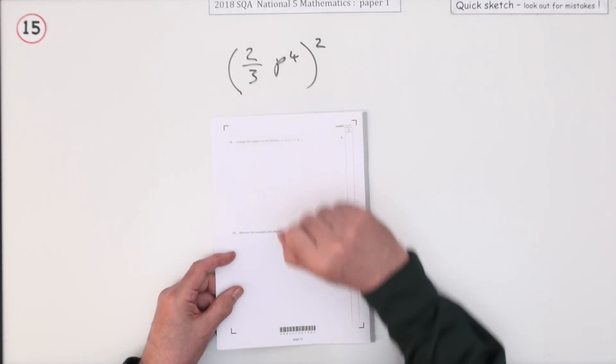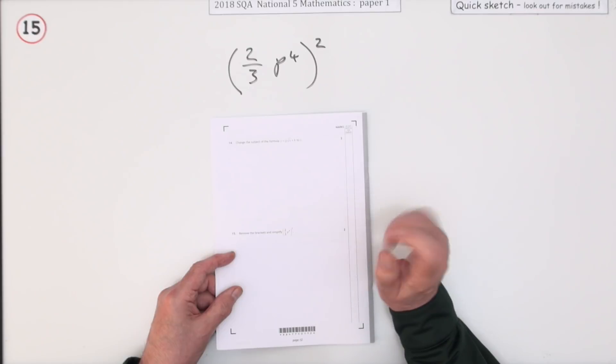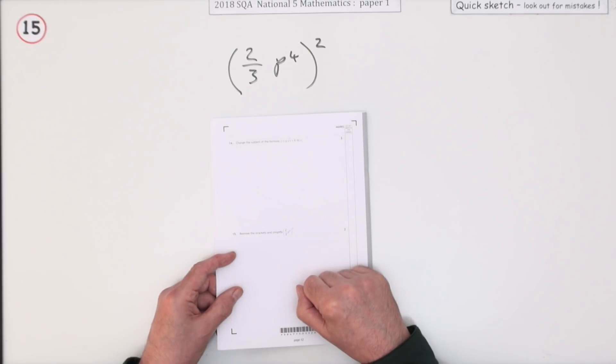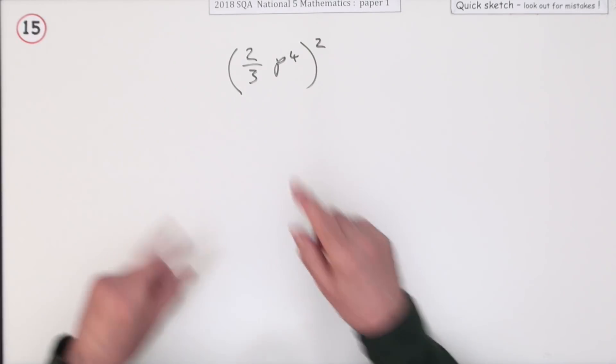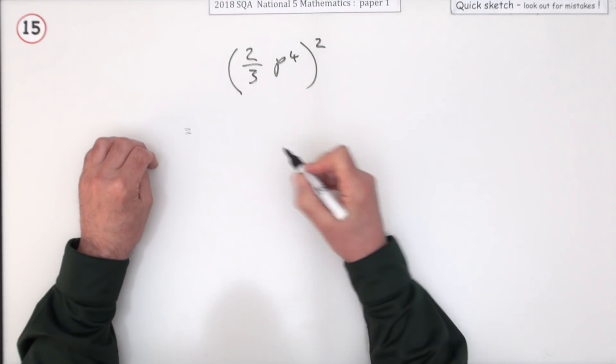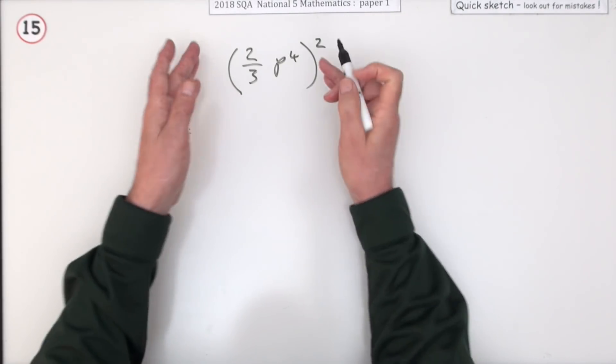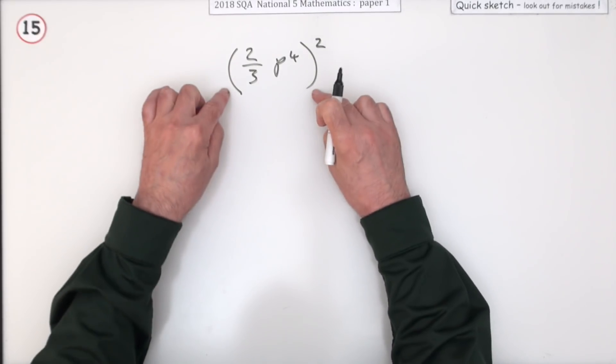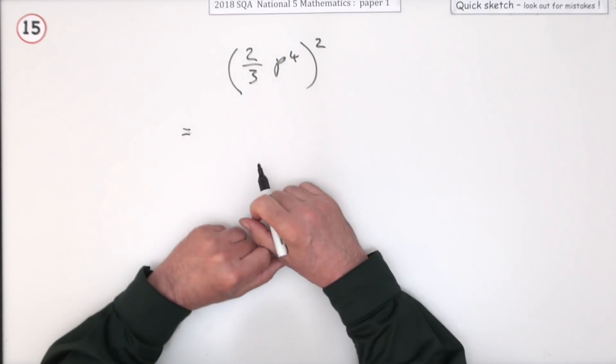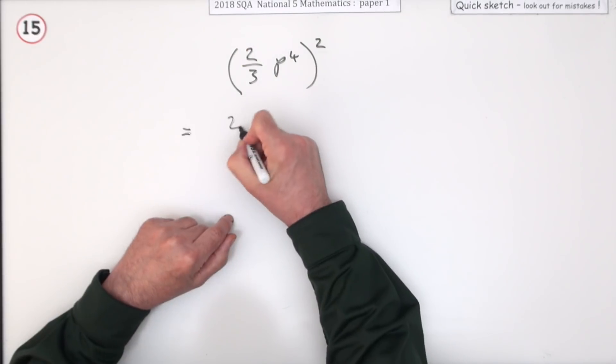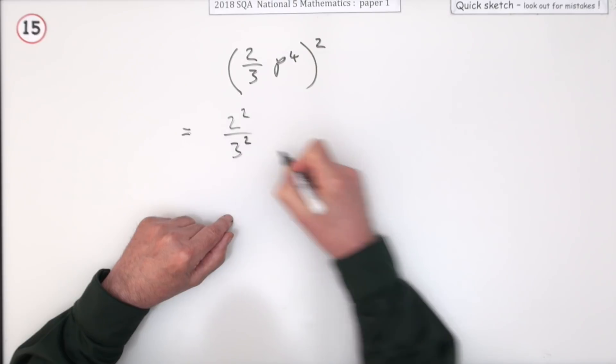Number 15 from paper 1 of the 2018 National 5 maths. Two marks for just removing the square from that bracket—much the same way as number 14 ended. So we're going to square that out. The bracket means everything inside is getting squared, or you can think the squared means it's the bracket times itself. Either way, the 2 is going to be squared, the 3 is going to be squared, and the p^4 is going to be squared.